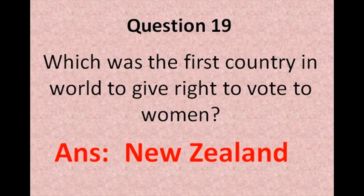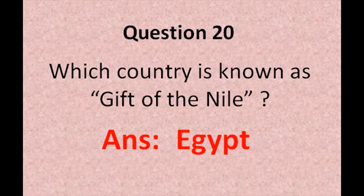Which was the first country in the world to give the right to vote to women? The answer is New Zealand. The last question for today's session is: Which country is known as the Gift of the Nile? The answer is Egypt.